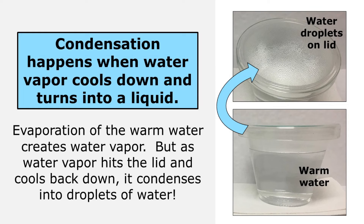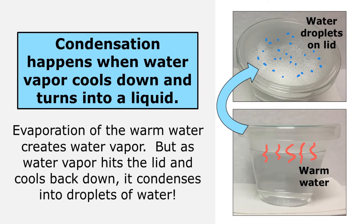Condensation happens when water vapor cools down and turns into a liquid. Evaporation of warm water creates water vapor, but as the water vapor hits the lid and cools back down, it condenses into droplets of water.